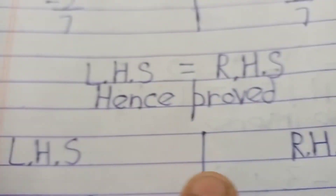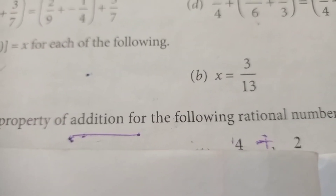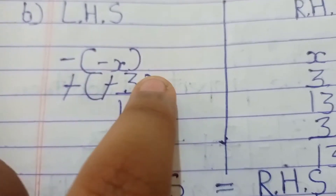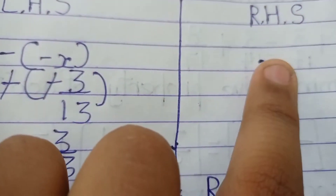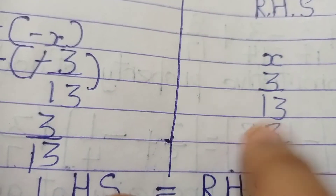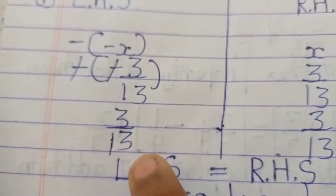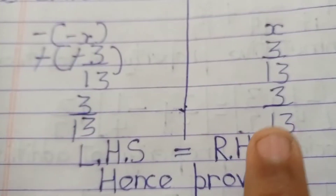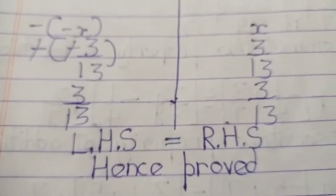Part (b): x = 3/13. LHS = -(-3/13). The two negatives cancel, giving 3/13. RHS = 3/13. LHS is equal to RHS. Hence proved.